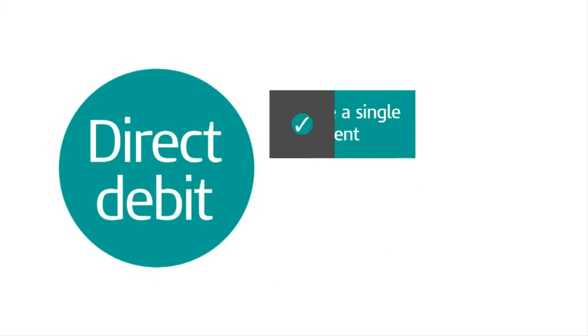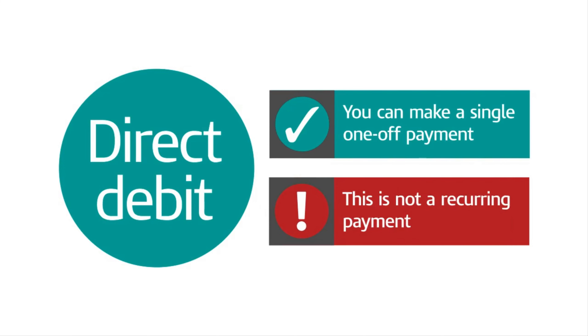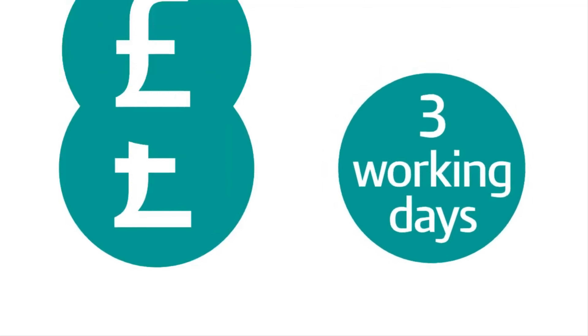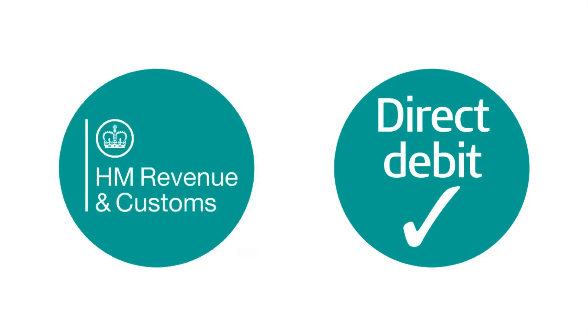You can make a single, one-off direct debit payment for your corporation tax bill. This is not a recurring payment. If you've not paid by direct debit before, allow five days for this to be set up. It should then take three working days each time you pay, once you've already authorised a direct debit from HMRC.